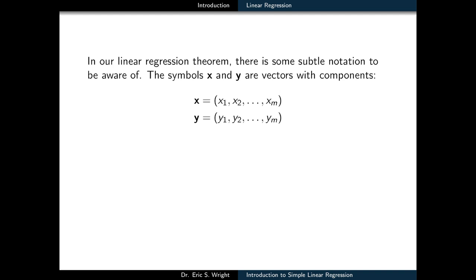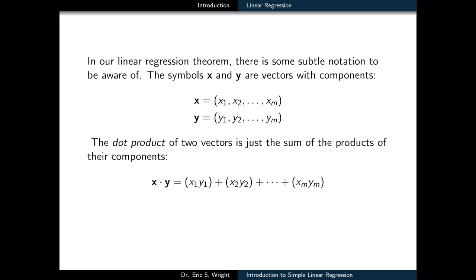The symbols, boldface x and boldface y, are vectors with components equal to just the x and y coordinates found in the data set, x1 through m and y1 through m. The dot product of the x and y vectors is found in a few places in the formulas for the linear regression weights within the regression theorem. The way to compute it is just to form the sum of the products of the individual components of the two vectors.